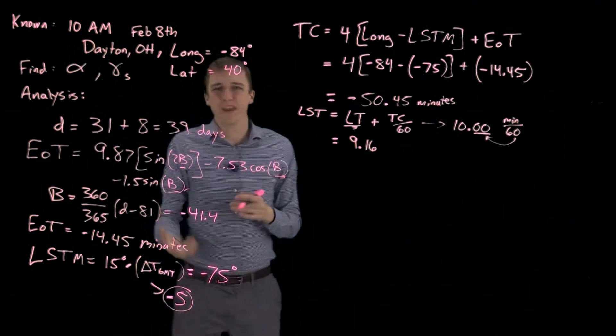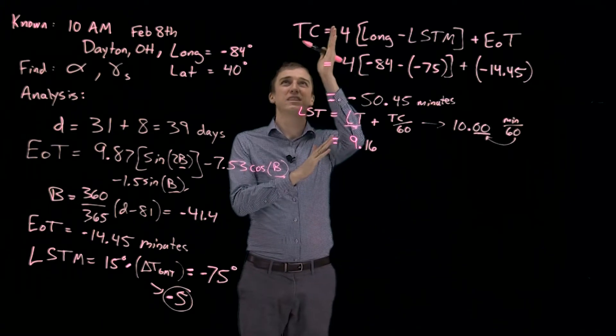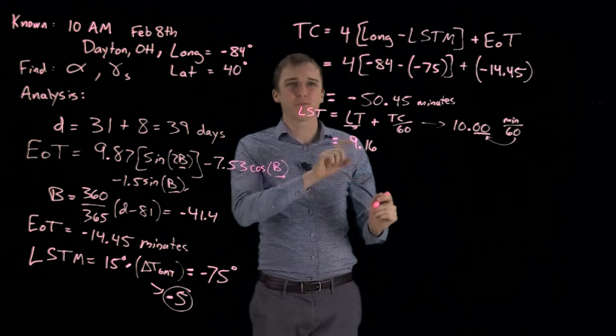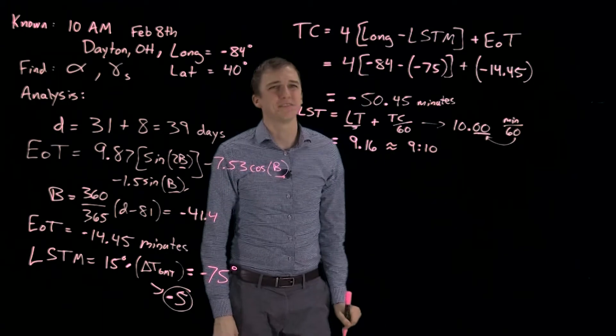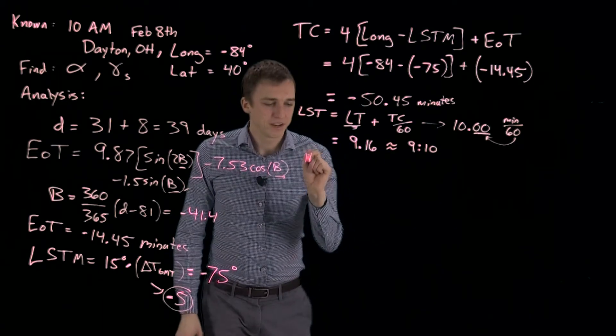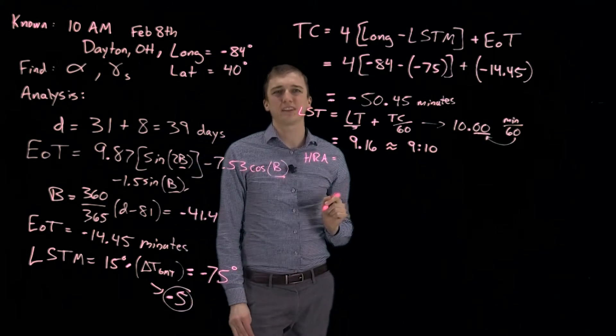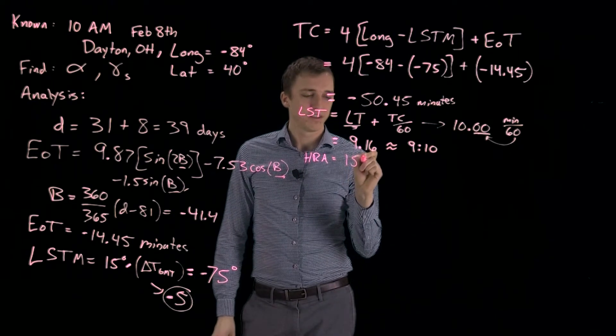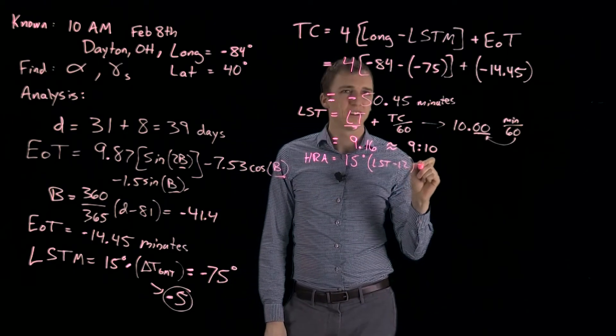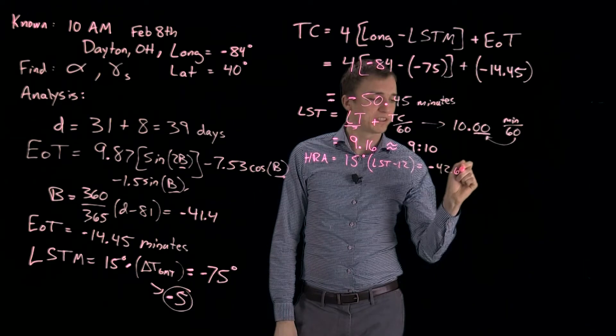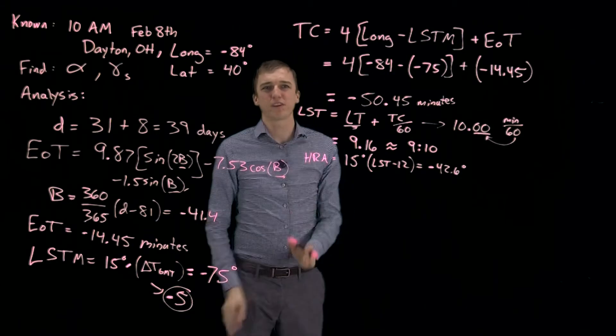That is our local solar time. So although our local man-made time is 10 o'clock, when it comes to solar time, being noon is the sun is directly overhead, it's actually only 9.16 hours, which is about the same as 9.10 in the morning. So we can now find our hour angle, which is the angle of the sun relative to noon. That is 15 degrees times our local solar time minus 12, which is minus 42.6 degrees. So the sun is 42.6 degrees away from being directly over our heads.